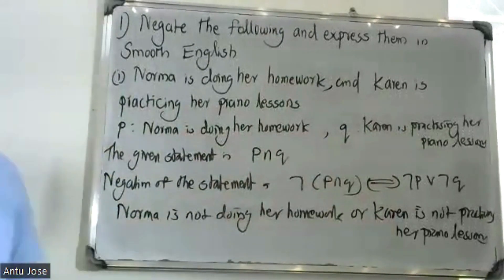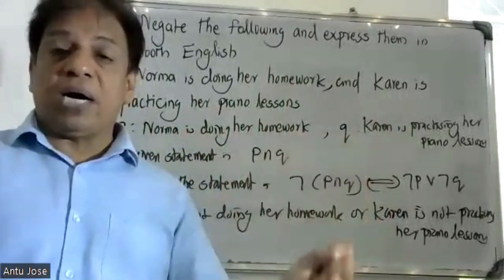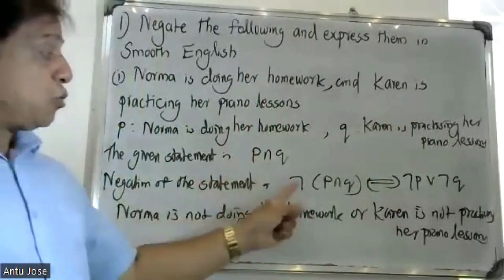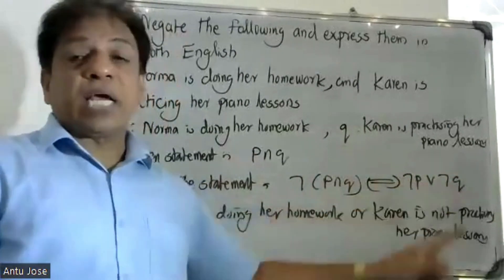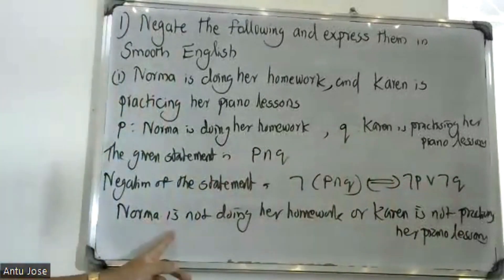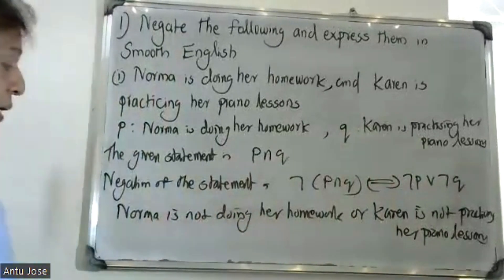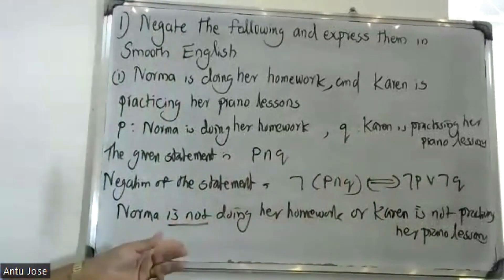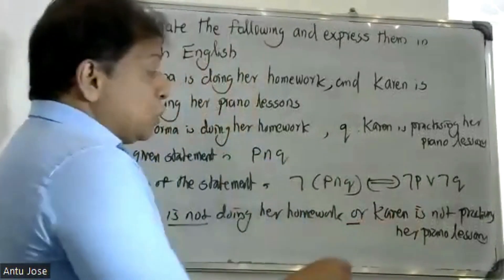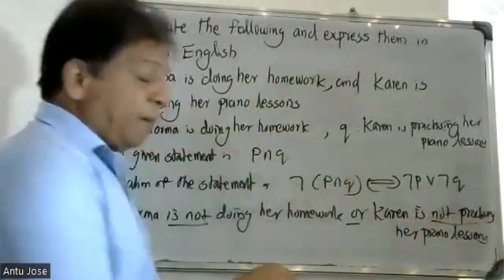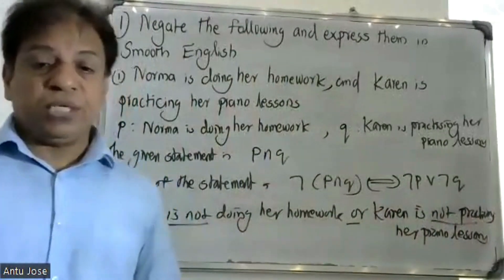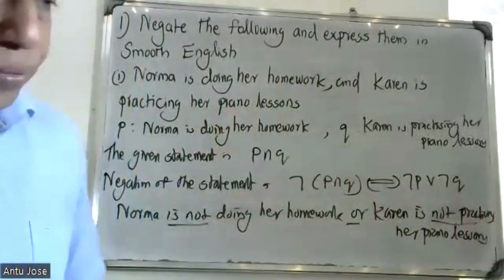By using De Morgan's formula, the negation of P and Q becomes negation P or negation Q. That is: Norma is not doing her homework, or Karen is not practicing piano.